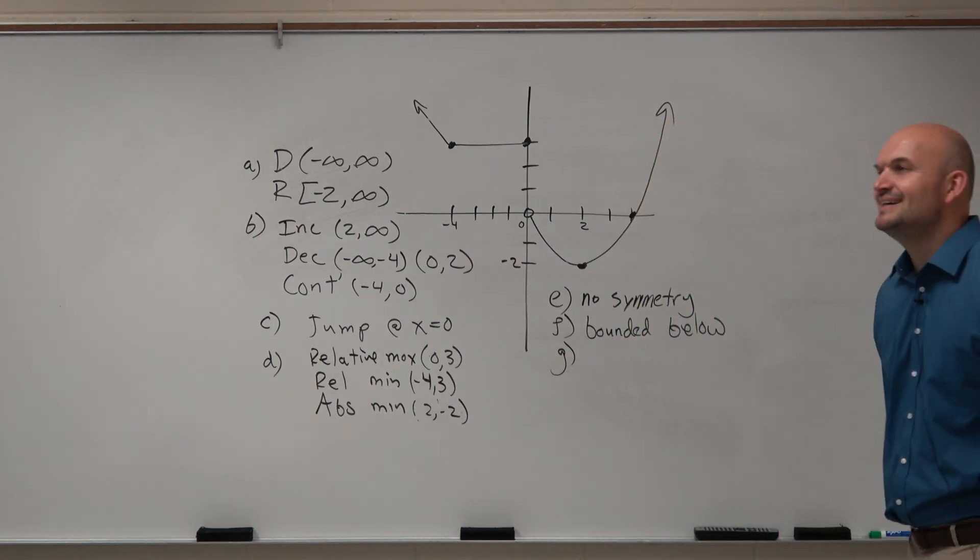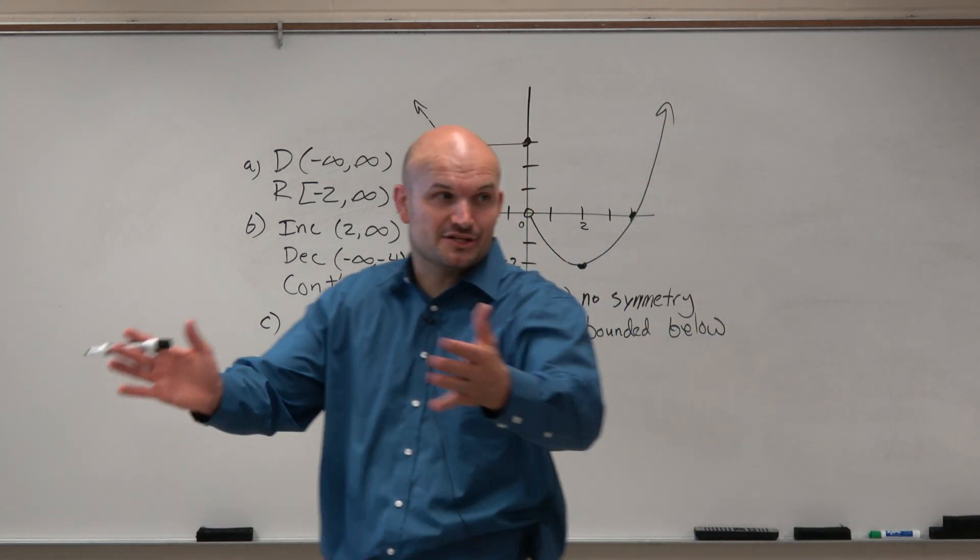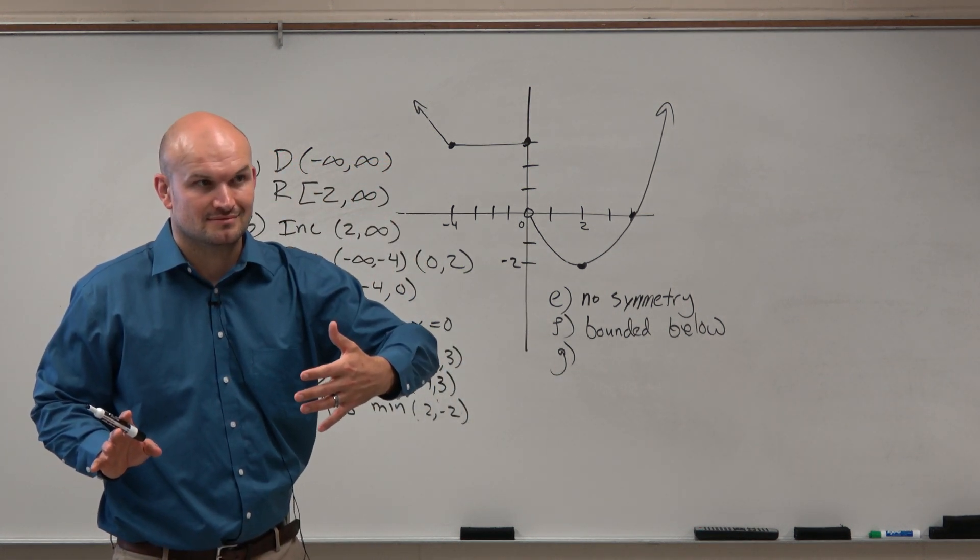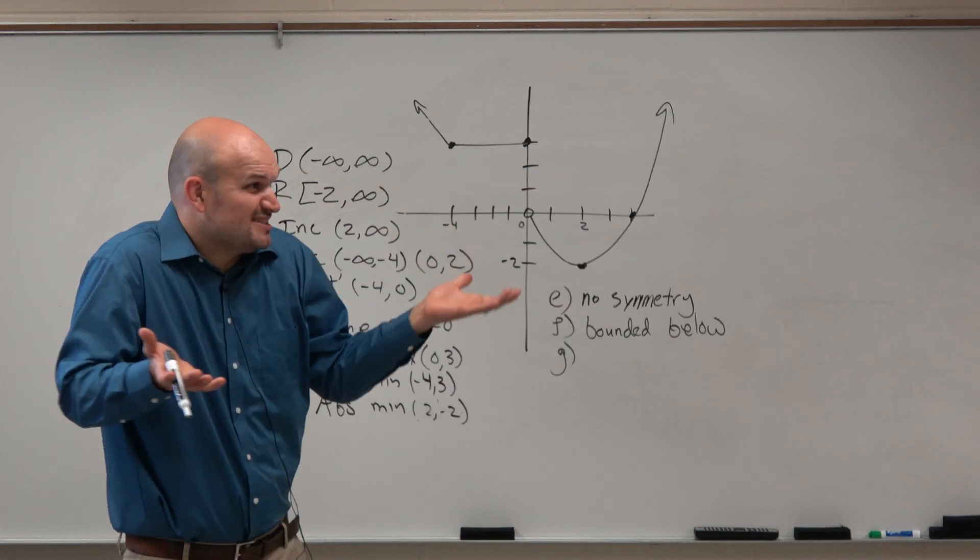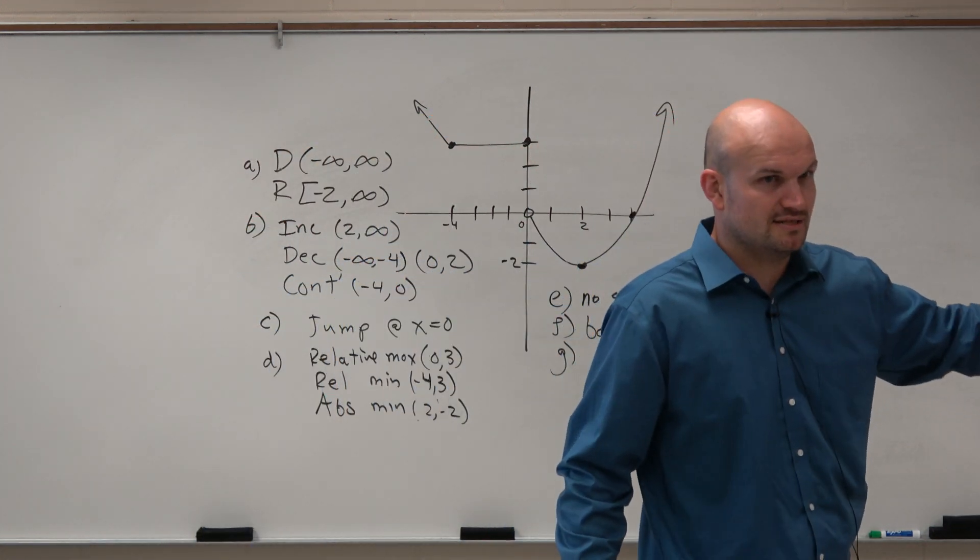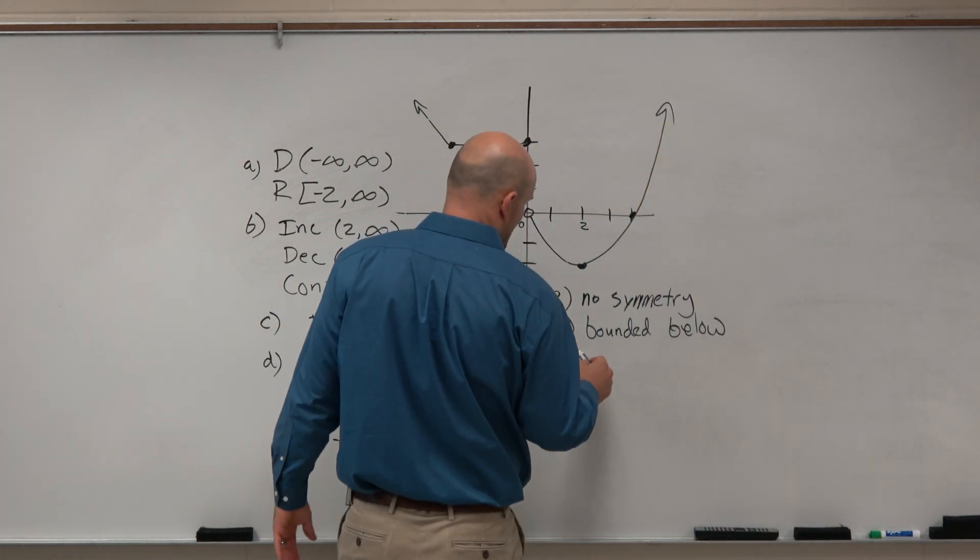E, F, R, I forgot to say G. G is going to be the end behavior. So as the graph continues going to the left, where's it going? Up, right? We can just say it's rising up. Let's just keep it simple. As the graph continues going to the right, it's up. So we're going to say rises left, rises right.